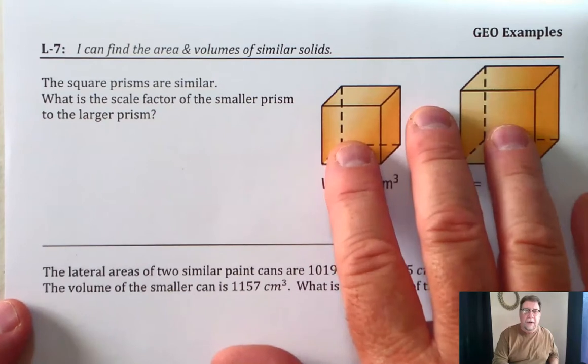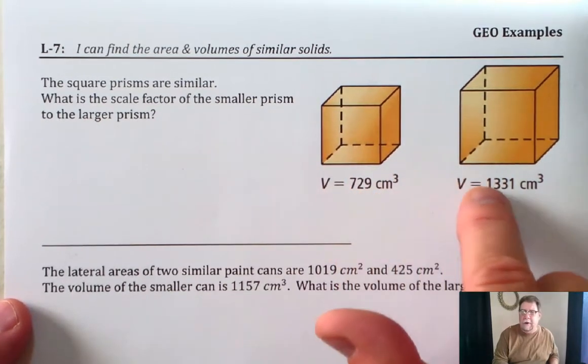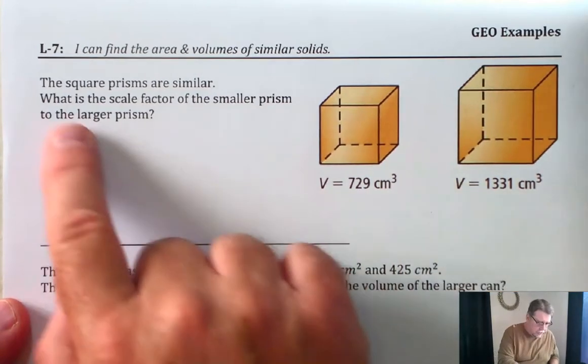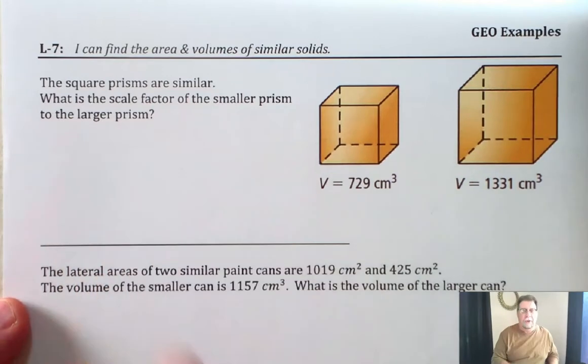So here we have two pyramids, or prisms rather. One has a volume that's smaller than the other. The question is, what is the scale factor of the smaller prism to the larger prism?